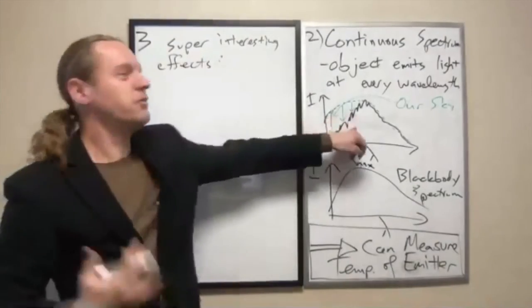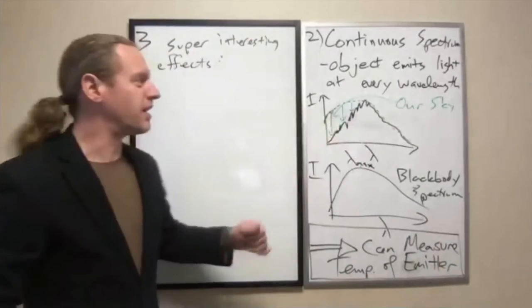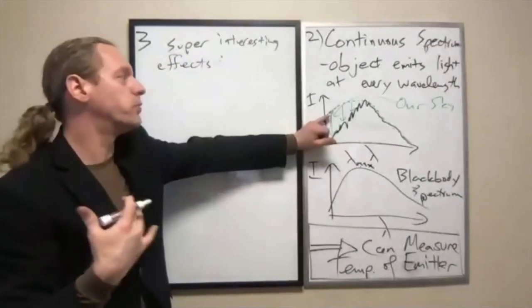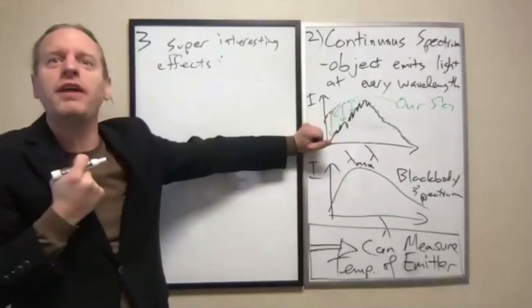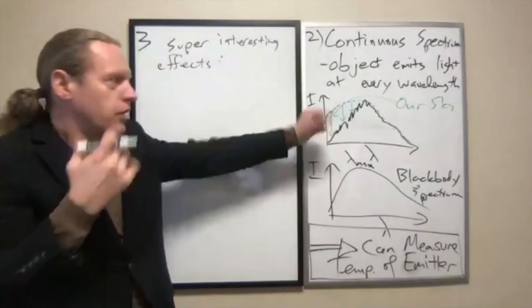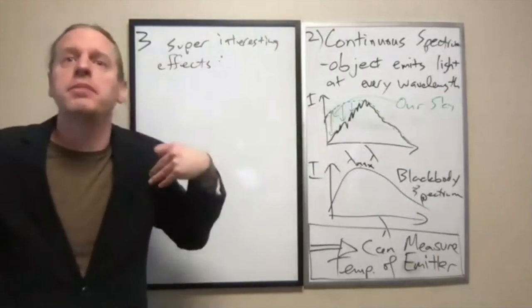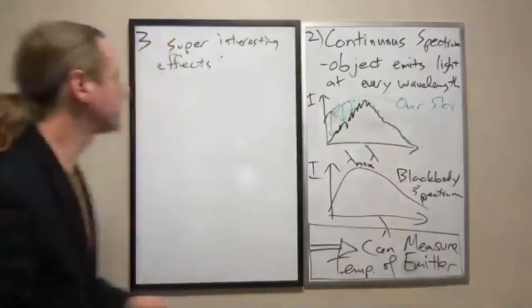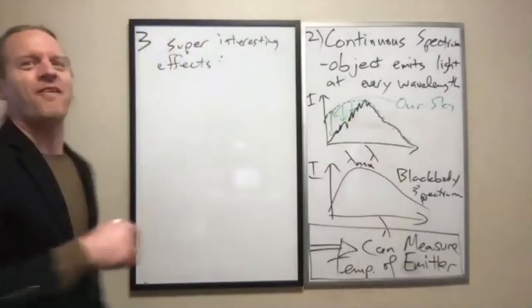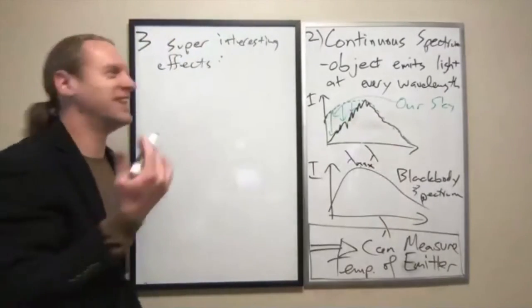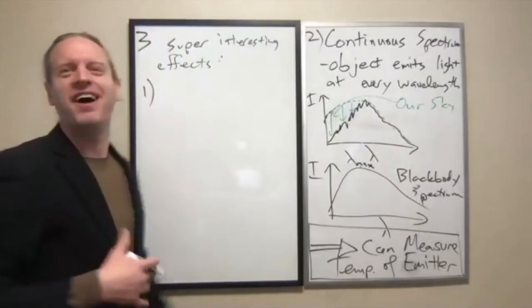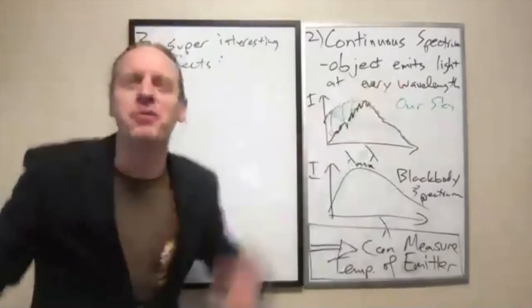Based on exactly what we just talked about, our atmosphere tends to absorb or reflect the blue light and allow more of the red light to pass through. So we now see, number one, the sky is blue.